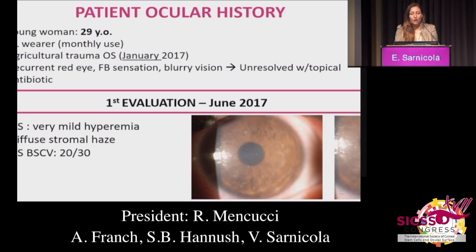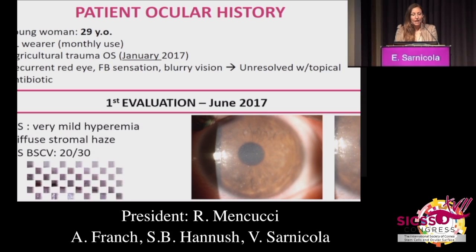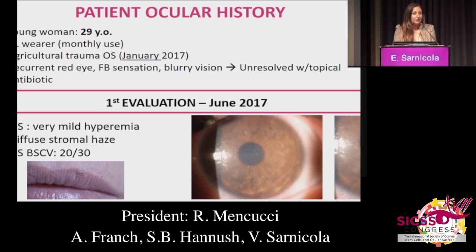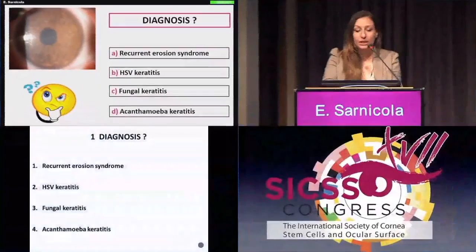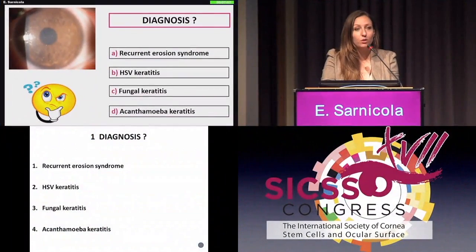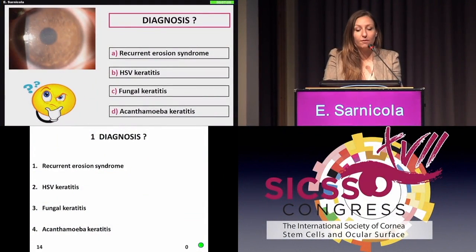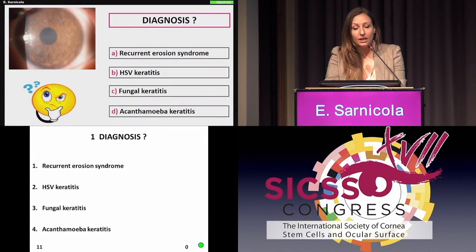So in June 2017, when she presented to us, we saw diffuse stromal haze reducing visual acuity considerably. Lip herpes was also present. My first question for you is: what is your diagnosis?